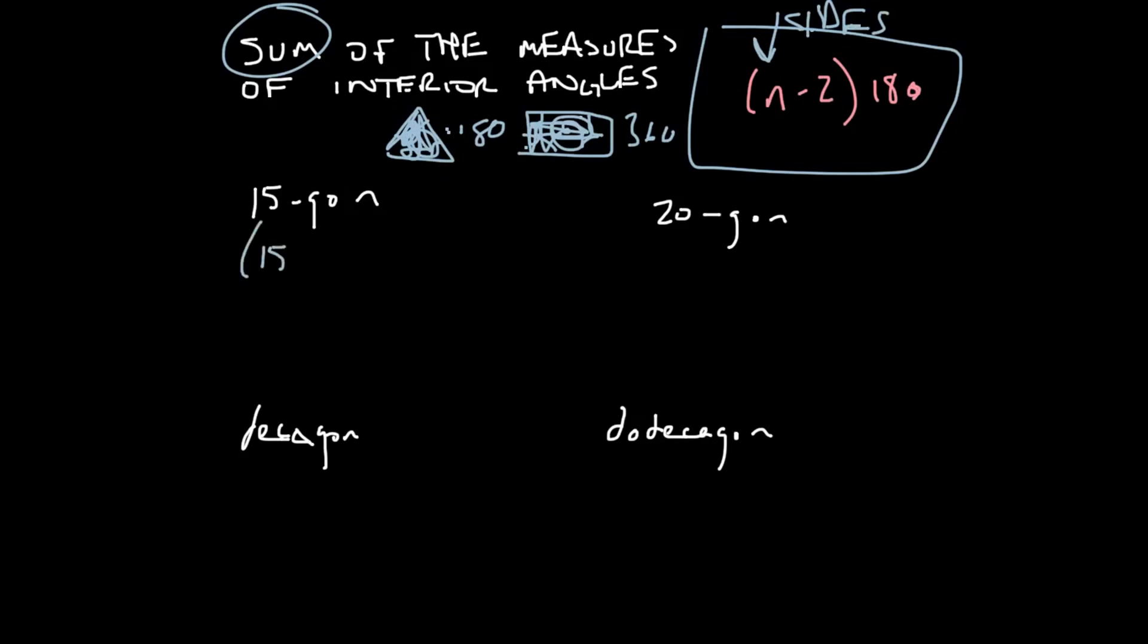So it would be 15 minus 2 times 180. Okay, so we know 15 minus 2 is what? The greatest number in the world. That's right, 13. And then we just multiply that times 180. And 13 times 180 is 2,340. So that's the measure of the degrees.